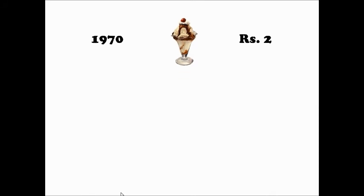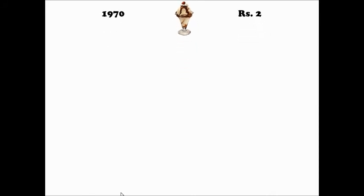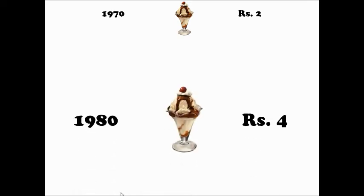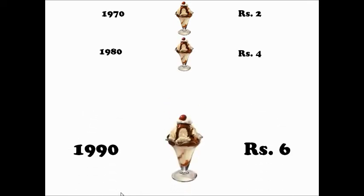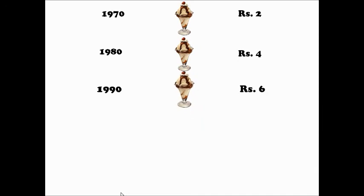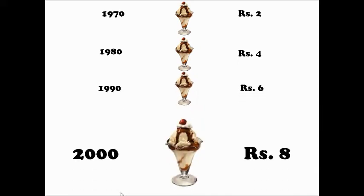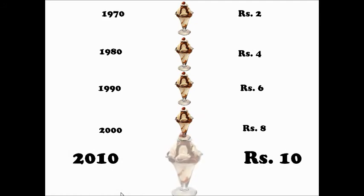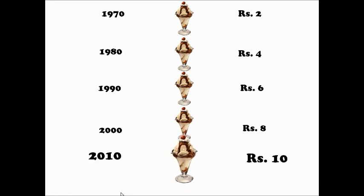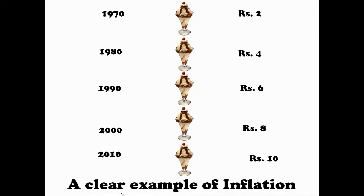Say in 1970 ice cream was priced at rupees 2. In 1980 it was rupees 4. In 1990 rupees 6. In 2000 rupees 8. In 2010 rupees 10. So there is a continuous increase in the price of ice cream. Usually the price of products increases over time, which is a clear example of inflation. This general increase in the price of products is known as inflation.